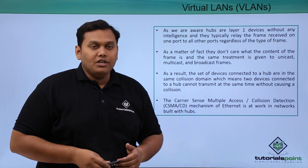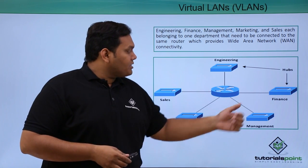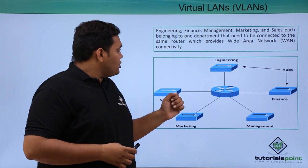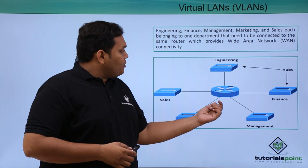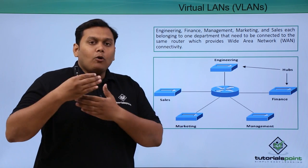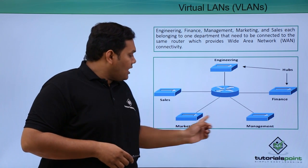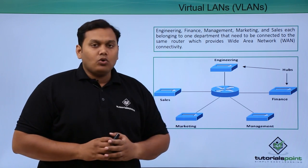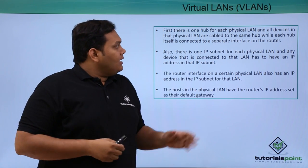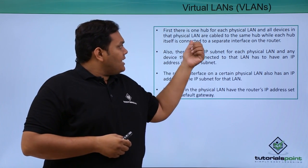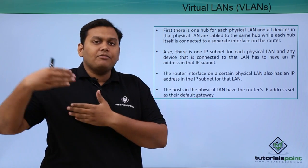In a typical hub-and-router design, there is a router connected to hubs for different departments — engineering, finance, management, marketing, and sales — each providing WAN connectivity. Each hub represents one physical LAN, and all devices in that physical LAN are cabled to the same hub, which is connected to a separate interface of the router.